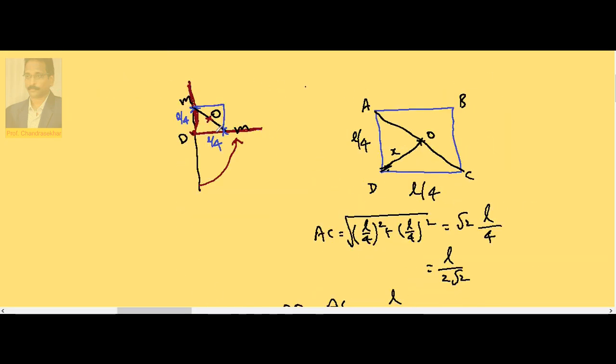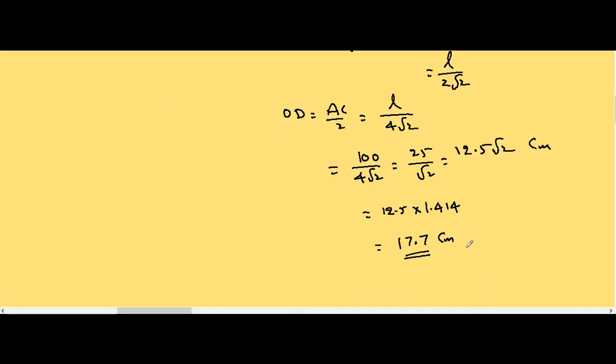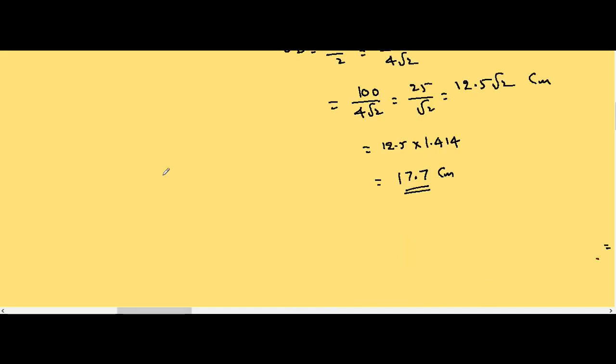So when a metal rod, a uniform metal rod, is bent at the center so that the two sides are perpendicular, then the center of mass distance from the center is now equal to 17.7 centimeters.